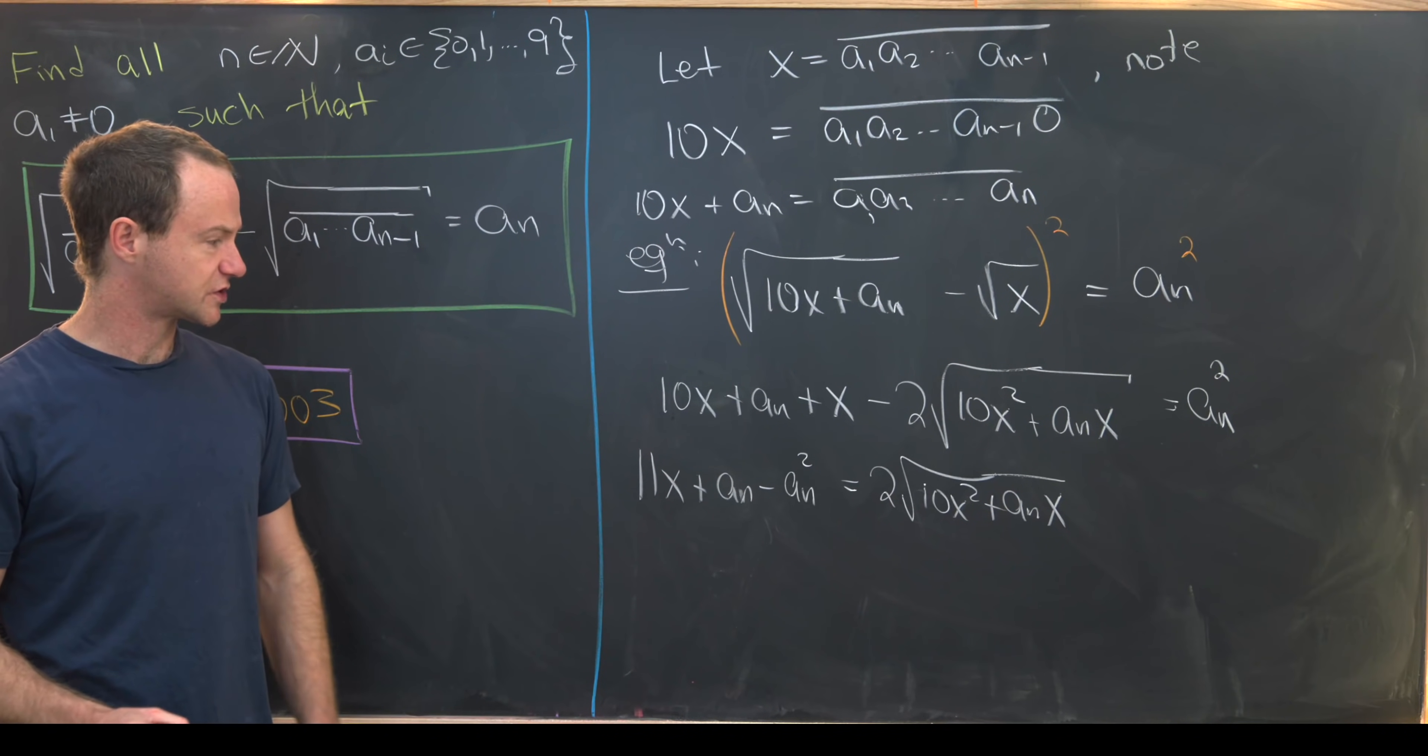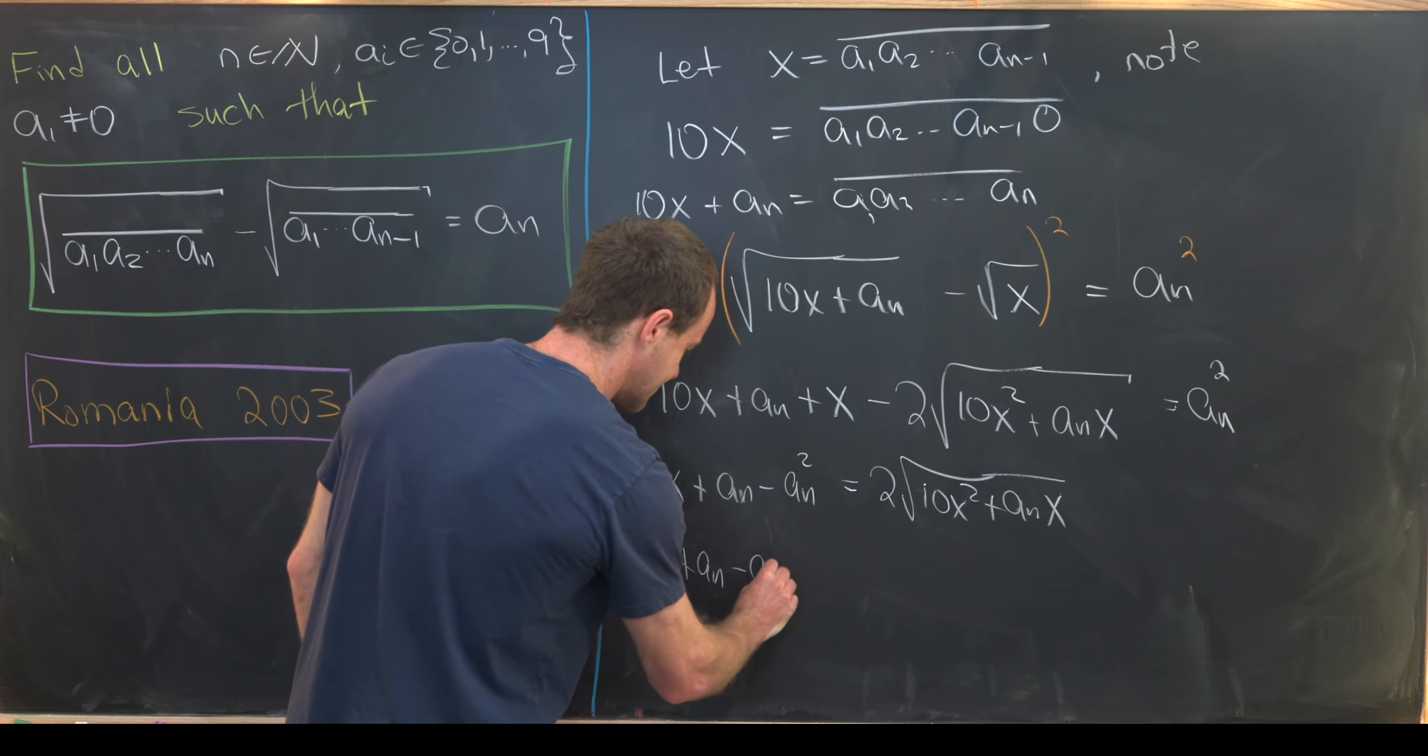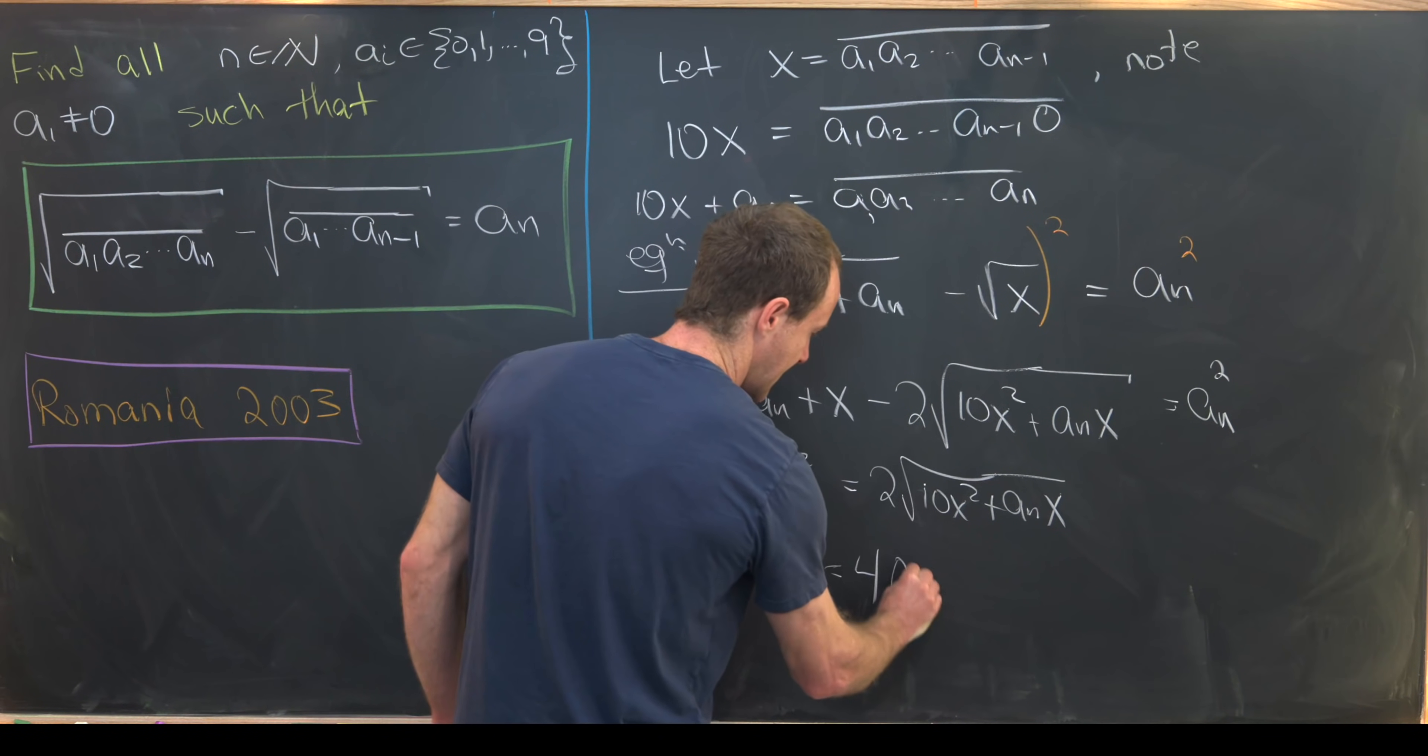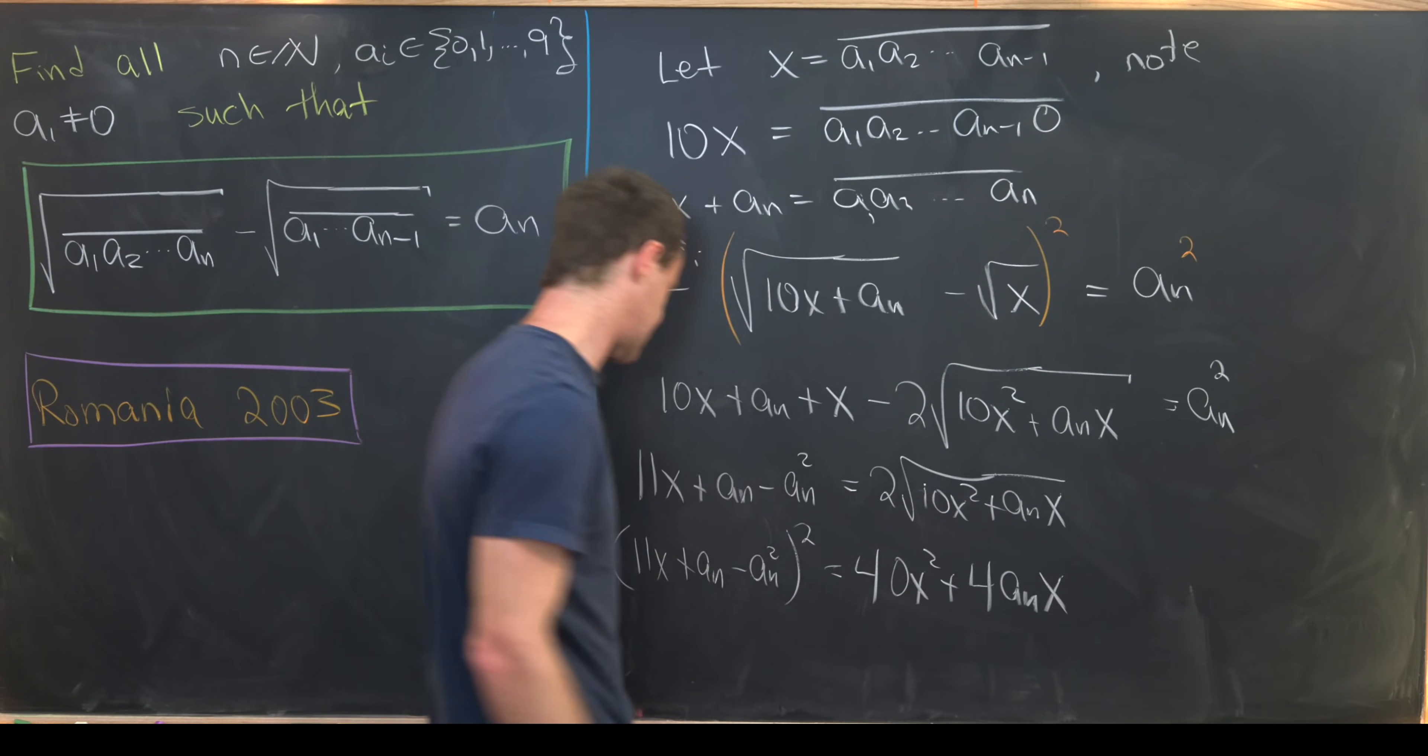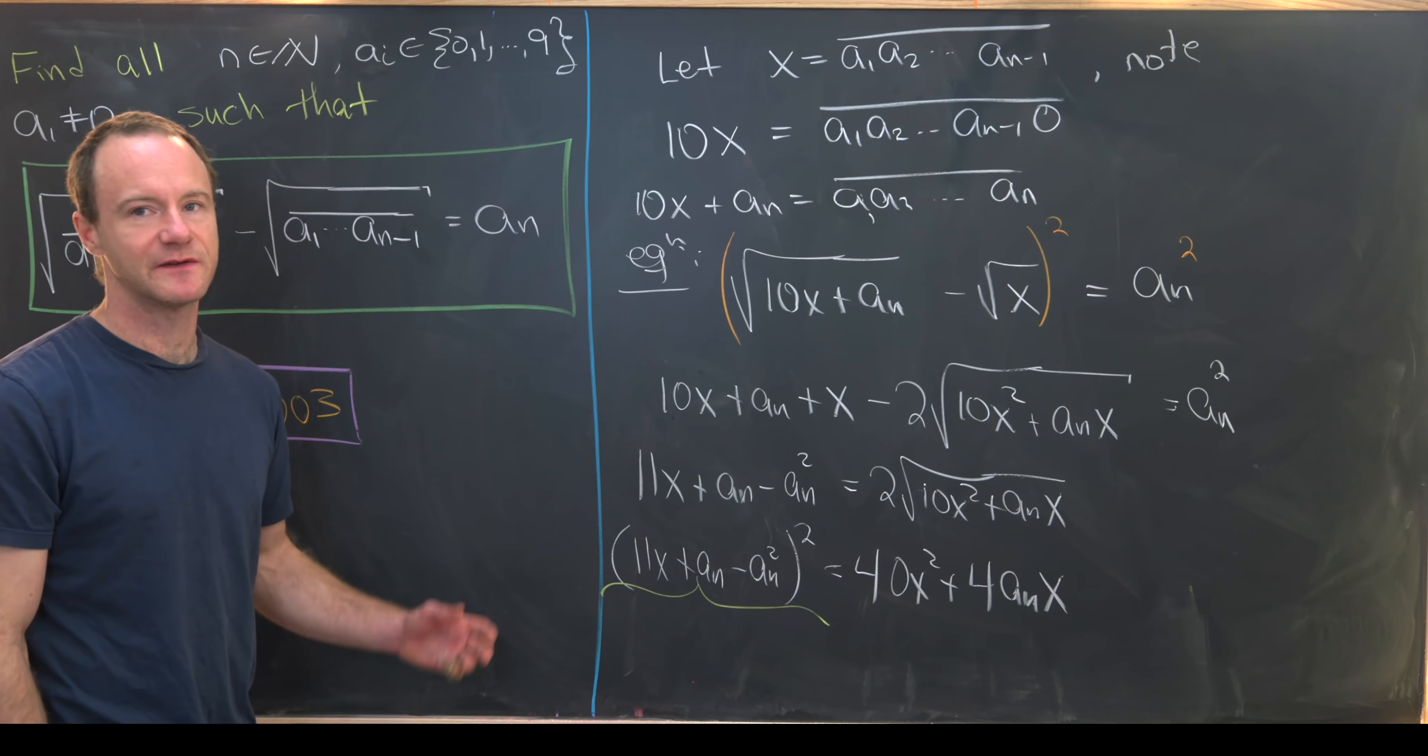Now we'll square both sides. So let's see what happens if we square both sides. We'll have 11x plus an minus an squared, squared, equals 40x squared plus 4an x.